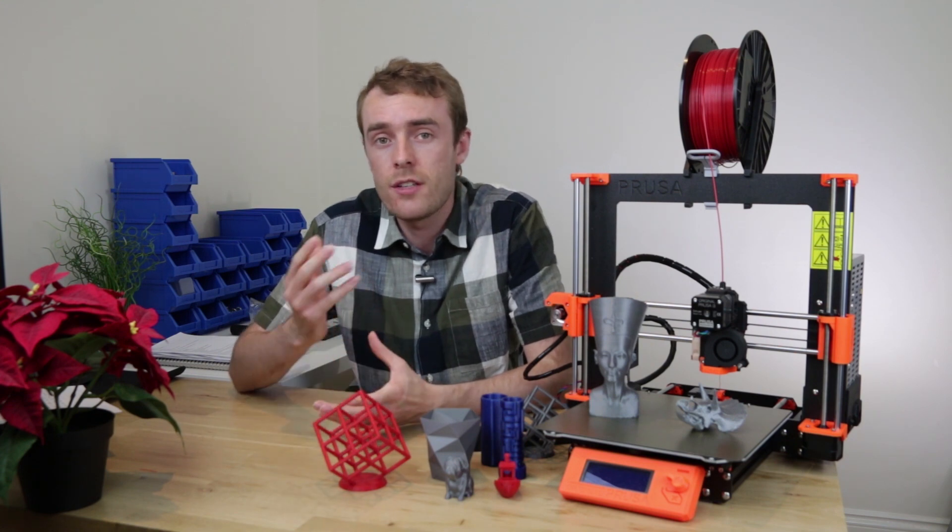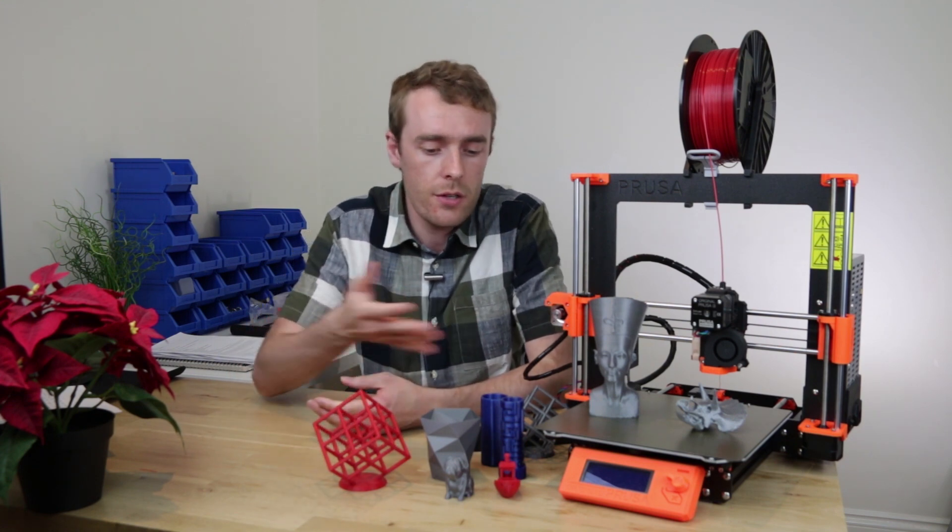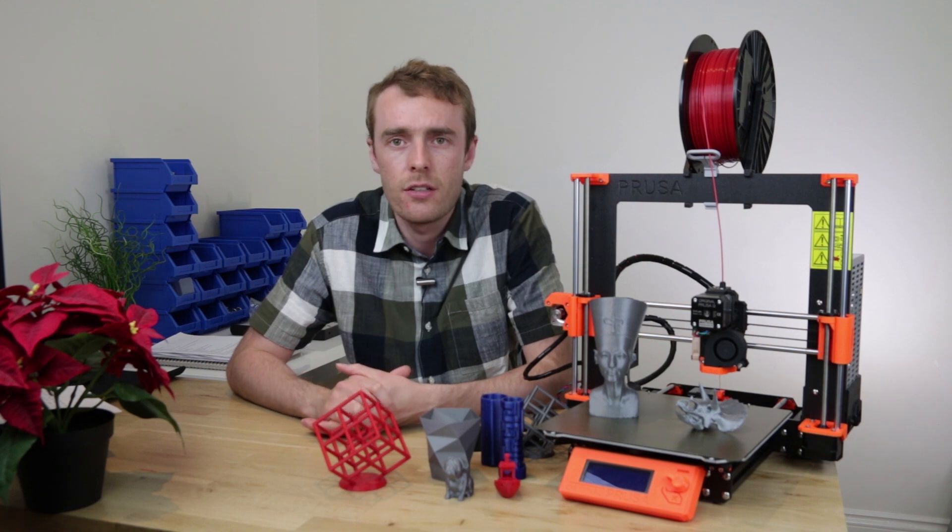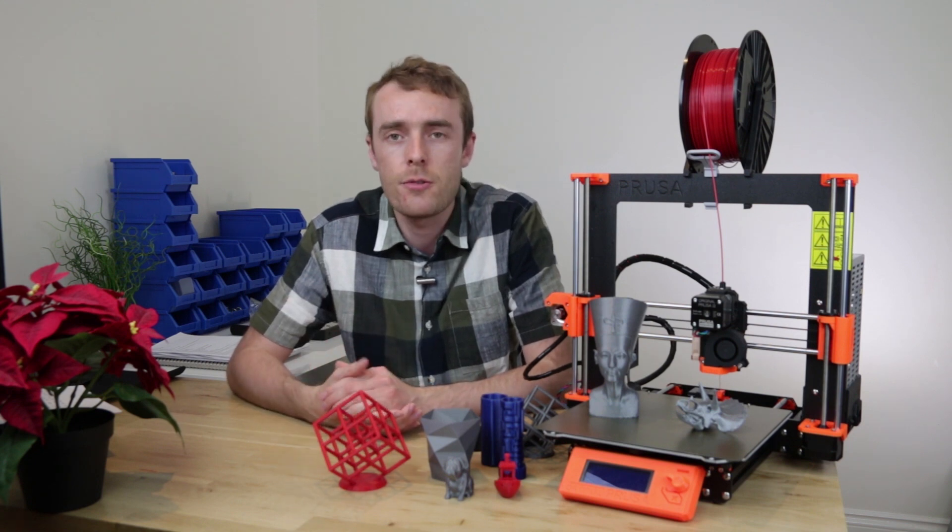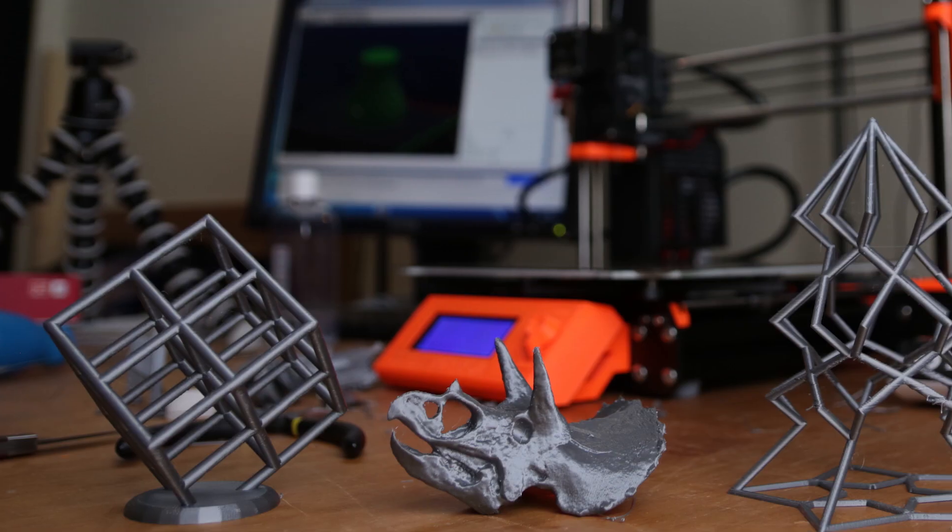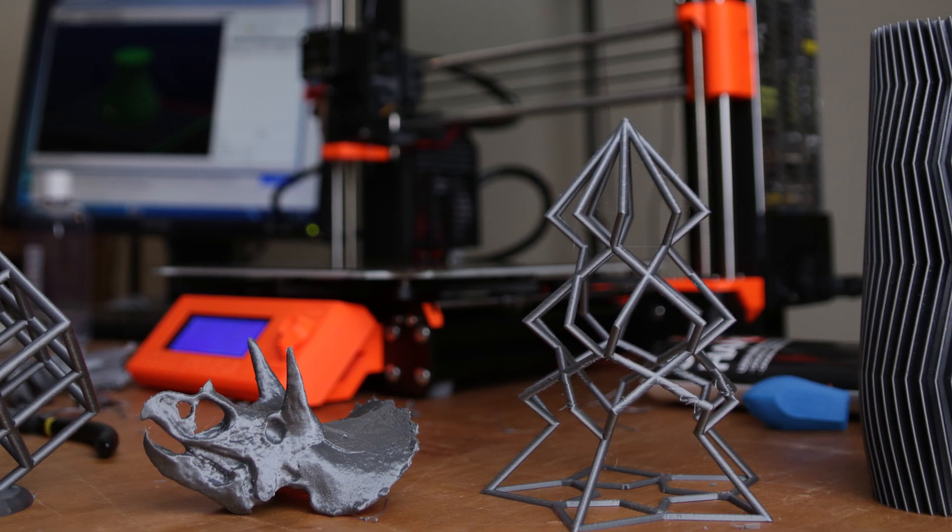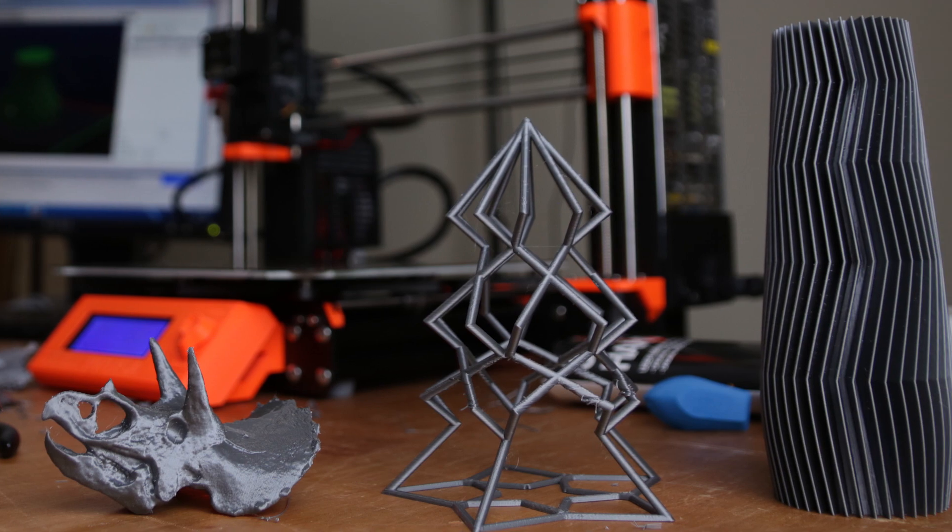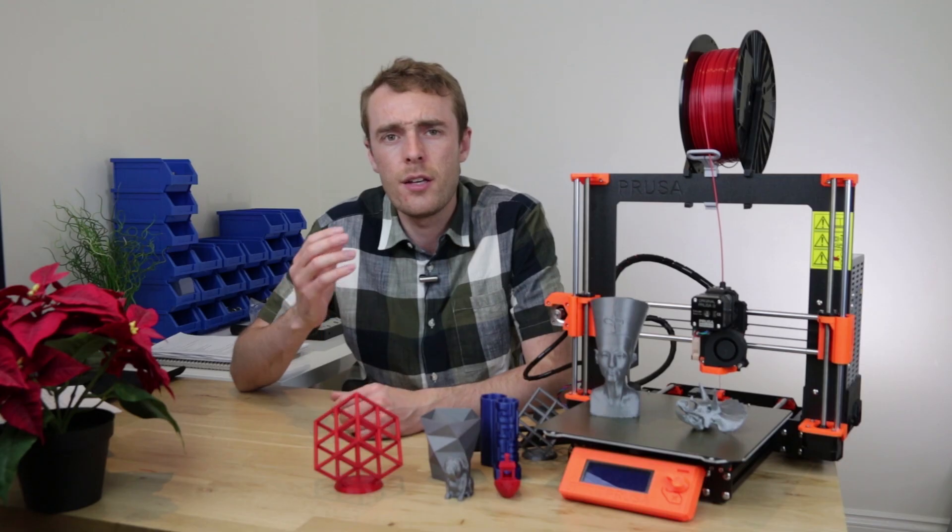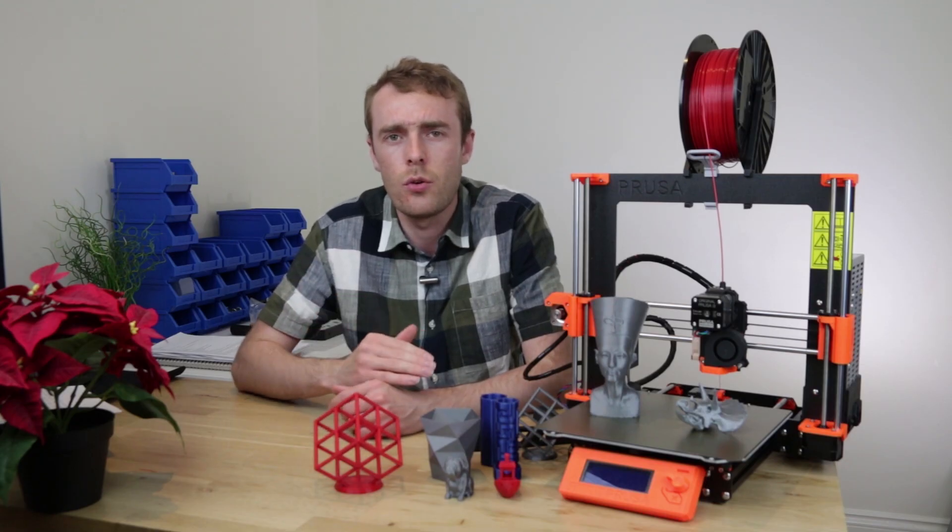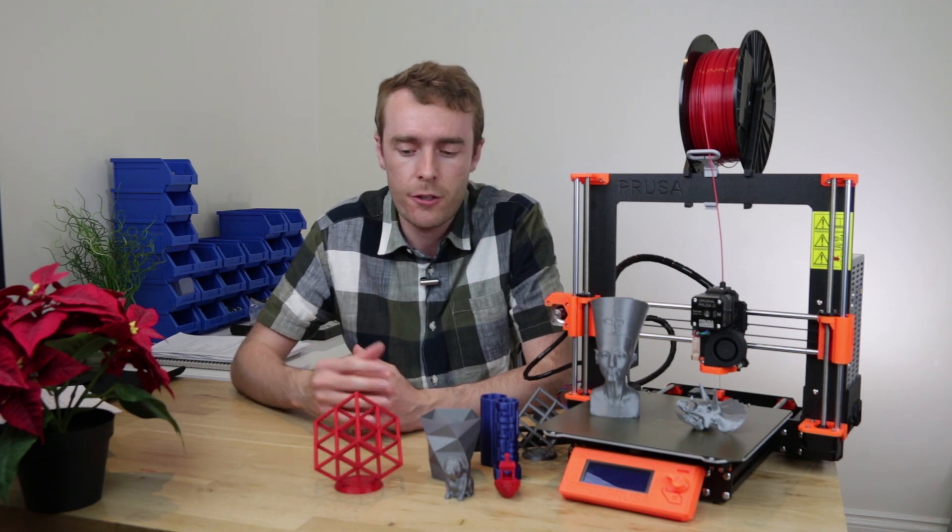So speaking of printing, what is the print quality like? Well in front of me you can see a number of prints off the printer. I've obviously printed a lot more than this but this is what I've got to show you today. We have things like ASA, PETG, and PLA. It comes with a roll of PLA and that's what all this silver is. The print quality I would say is well above average but it's definitely not the best I've seen.